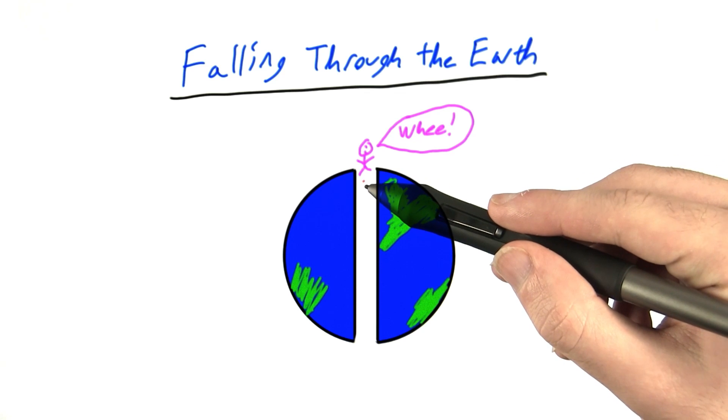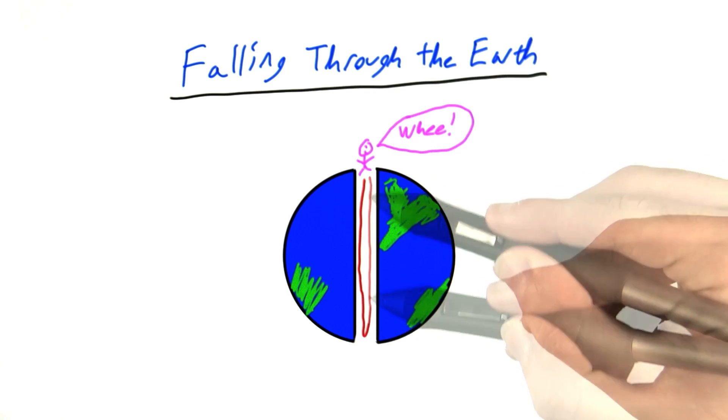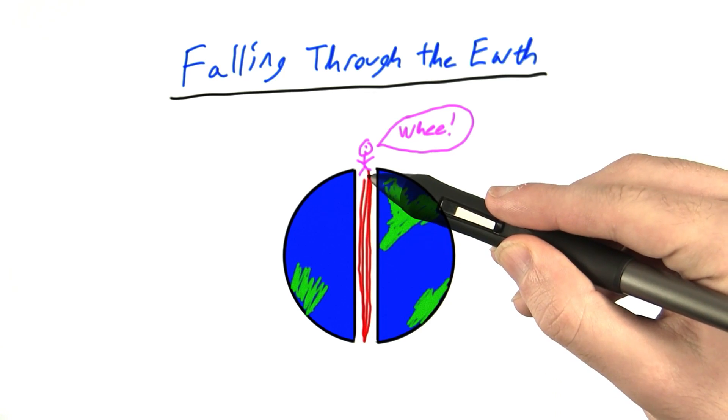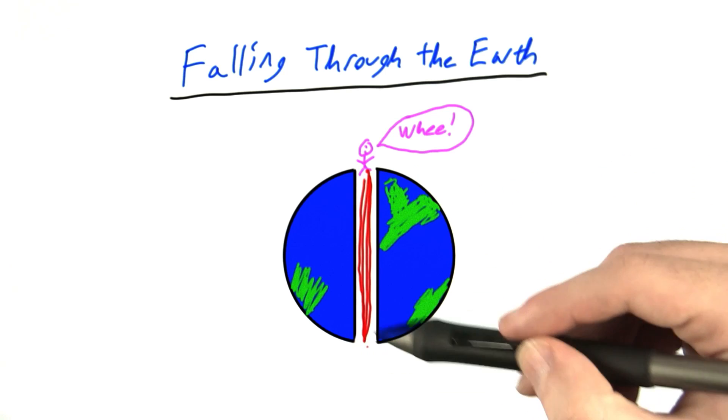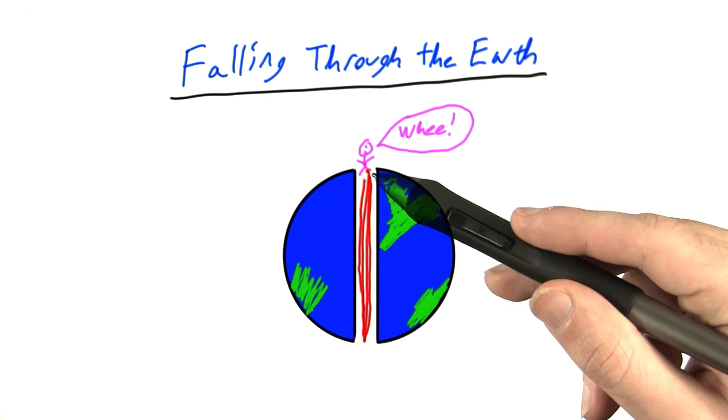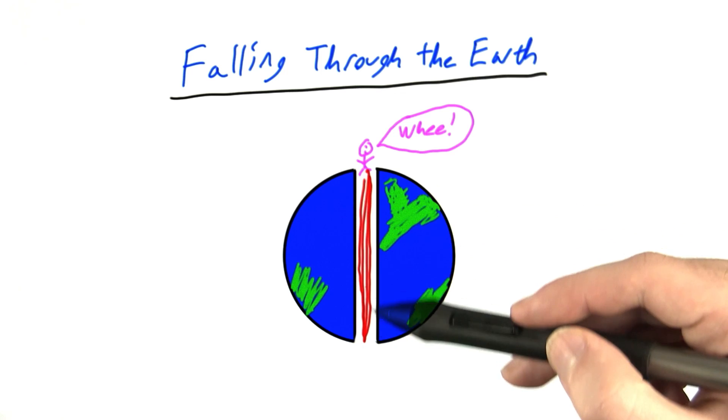Now it turns out, if you were to do this, you would actually oscillate back and forth between the Earth's surface on this side and the Earth's surface on the other side. And lo and behold, it turns out that this motion through the Earth's core is actually simple harmonic motion.